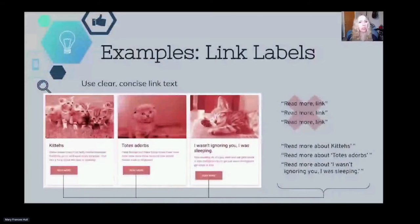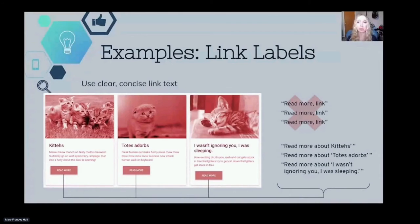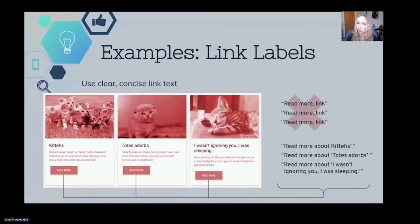To give you a better understanding, here's an example of some link labels. A common example I see is using something vague as link text, like 'read more.' For a set of users, they can see the correlation of the card, but out of context in a screen reader, this is really confusing. So it's really important to have clear, concise link text that explains the context of the link or the button — for example, 'read more about Kitties' instead of just 'read more.'